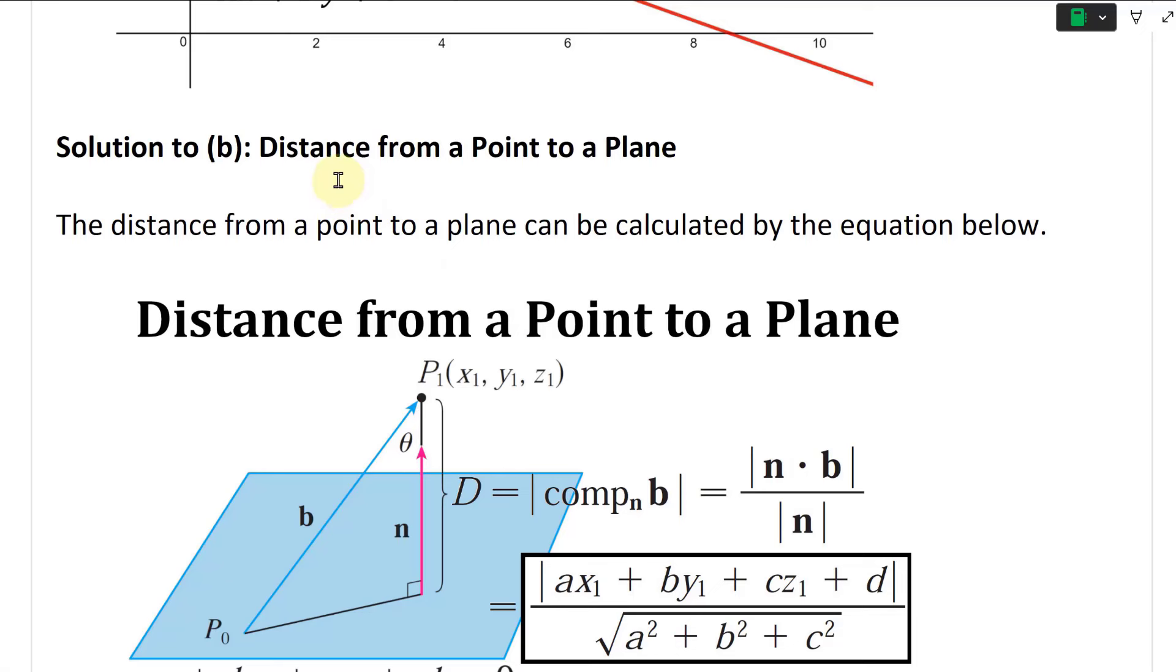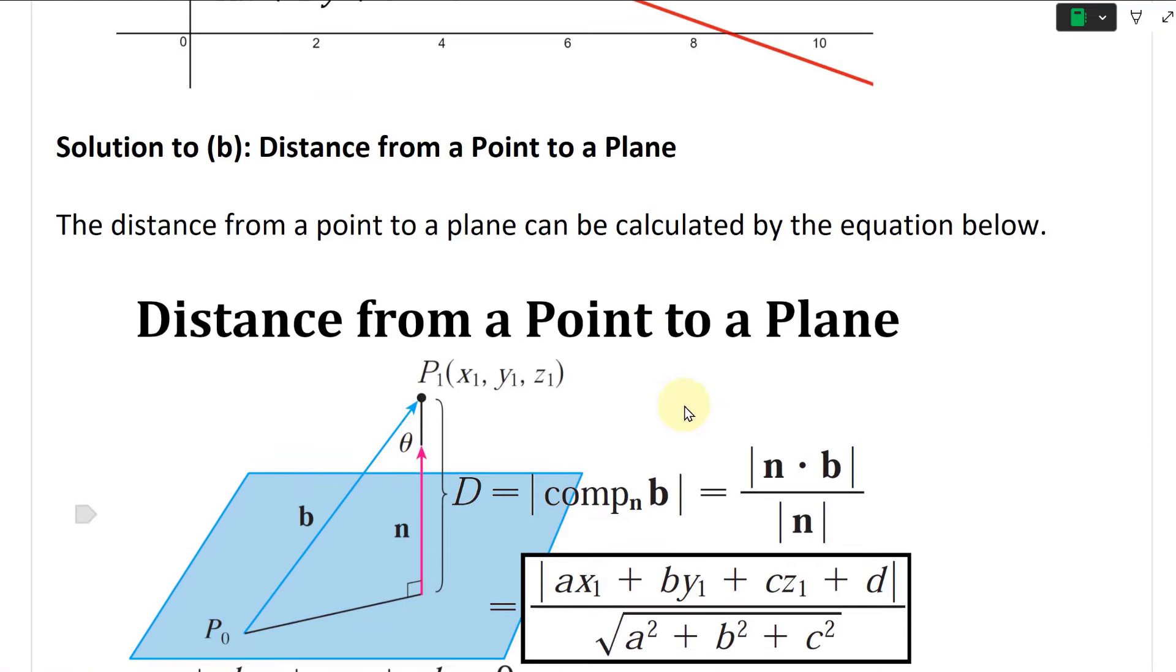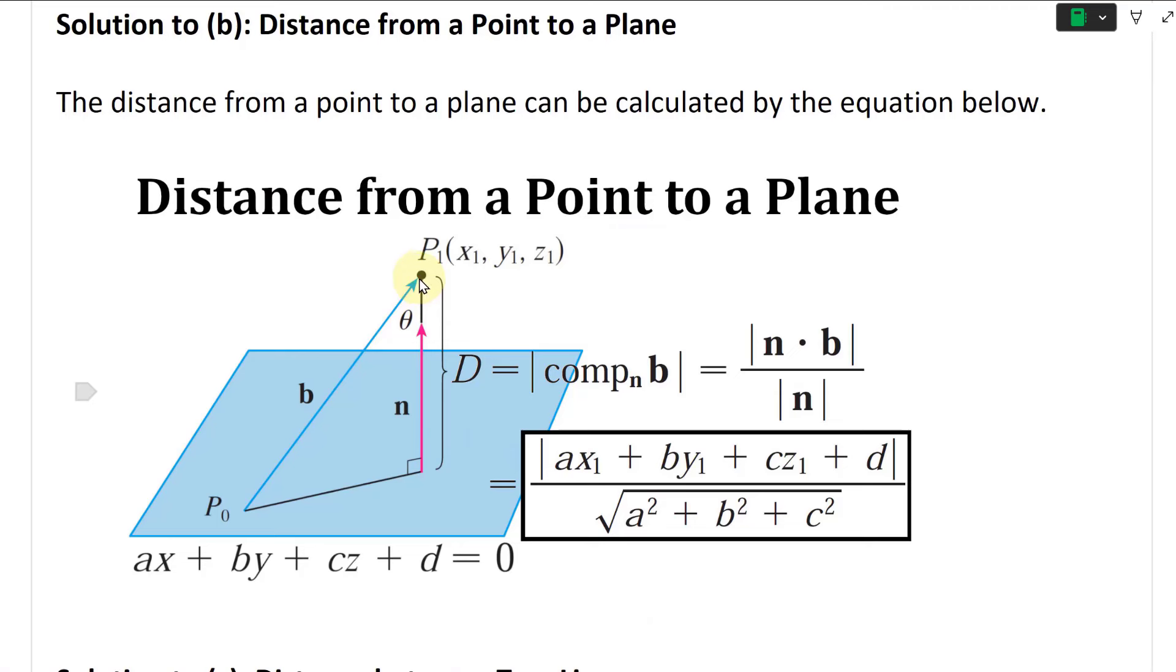Solution to B. This one asks for the distance from a point to a plane. The distance from a point to a plane can be calculated by the equation below. This was from my earlier video, so for distance from a point to a plane, you could just use this formula.